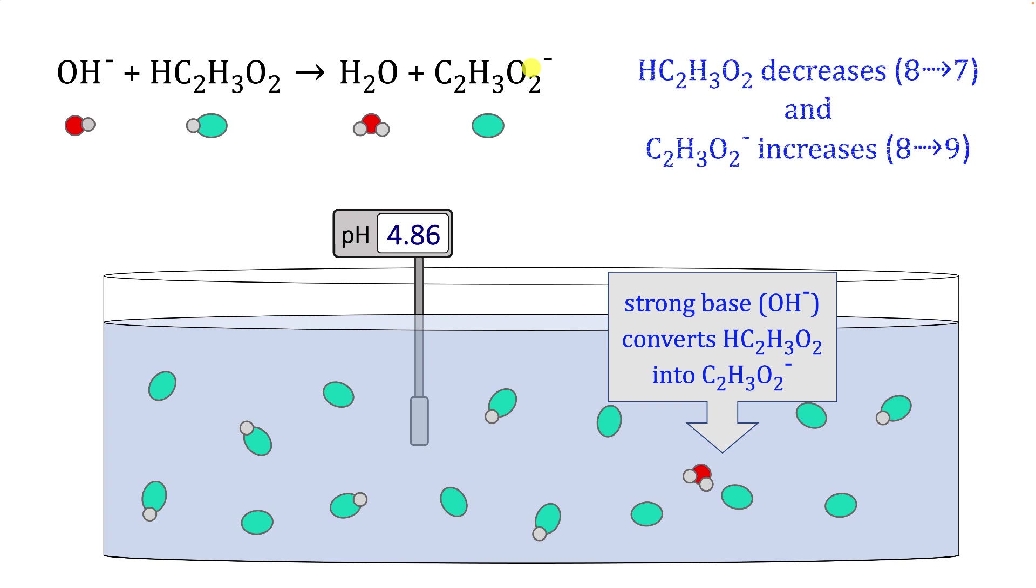This ends up decreasing the number of acetic acid molecules from 8 to 7 in this case. It increases the number of acetate ions from 8 to 9 in this case. And because we have so much water around, we're generally not showing that.